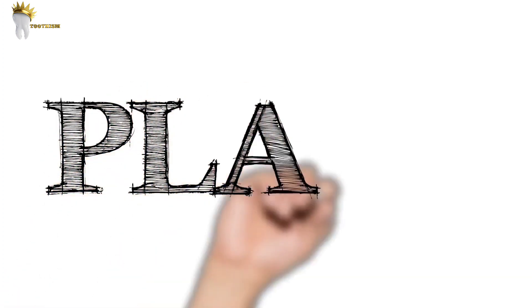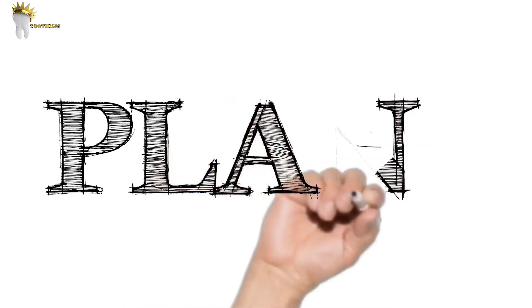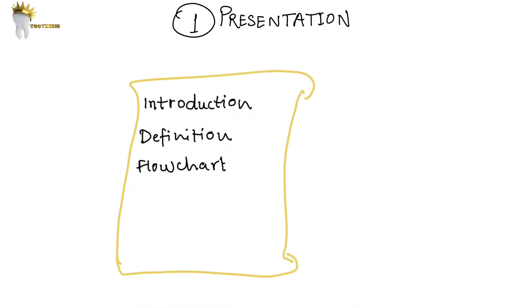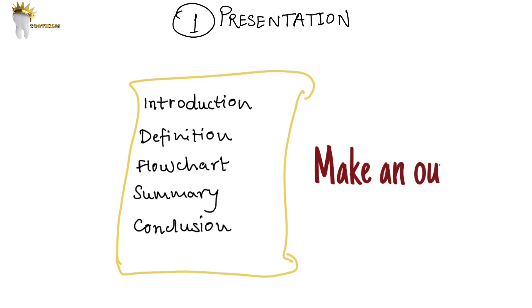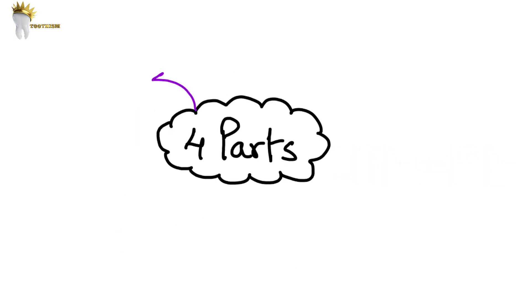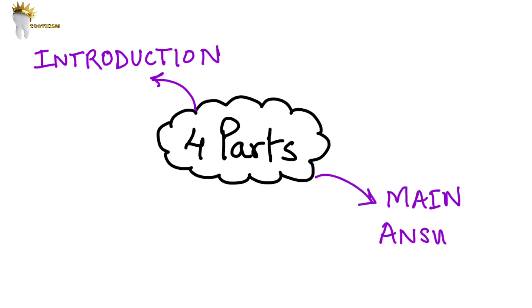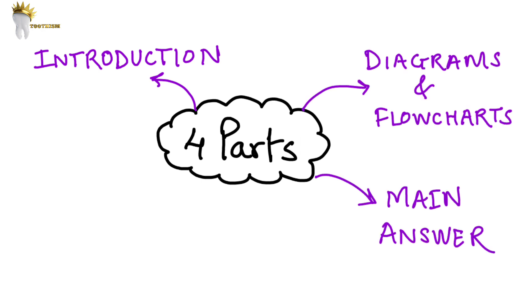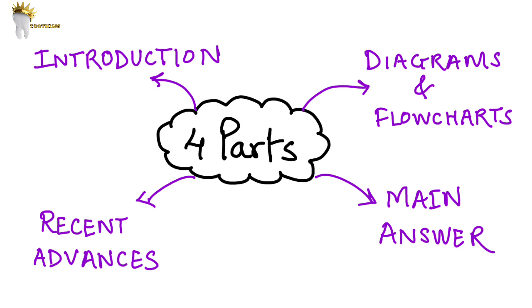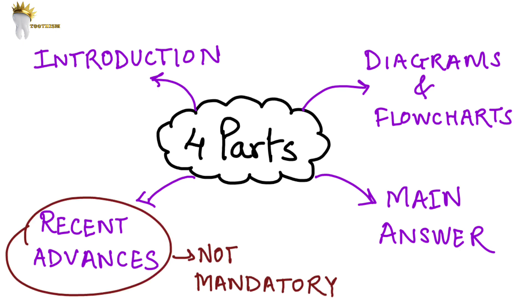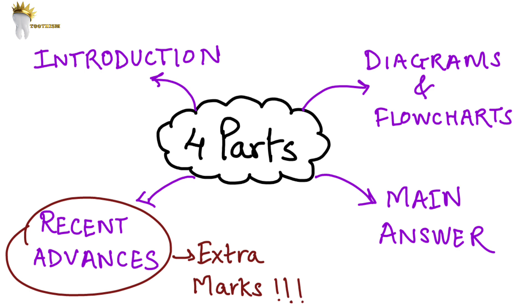In order to get your presentation right, you have to plan your answer before you begin writing. Make a rough outline in your mind or on the paper using a pencil. Your answer should have four parts: an introduction to the topic, the main answer, diagrams or flowcharts included within the main answer, and the fourth part is recent advances or relevant studies. This is not mandatory for undergraduates, but it's very good for getting extra marks and standing out among other students.